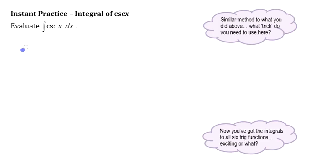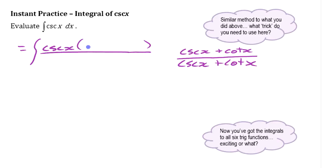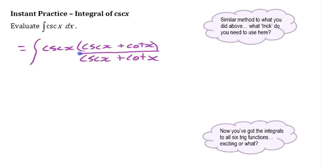Let's work with this. We're going to do that little trick but think about what we need here. We need to multiply cosecant x by (cosecant x + cotangent x) over (cosecant x + cotangent x). So we have our cosecant x multiplied by that, with a dx. We're going to make u equal to cosecant x plus cotangent x — the expression on the bottom.